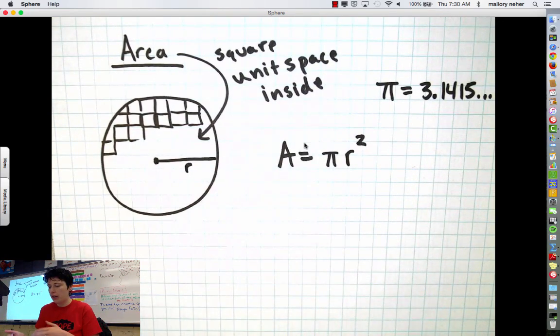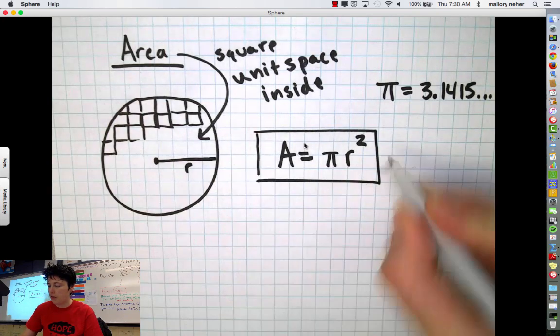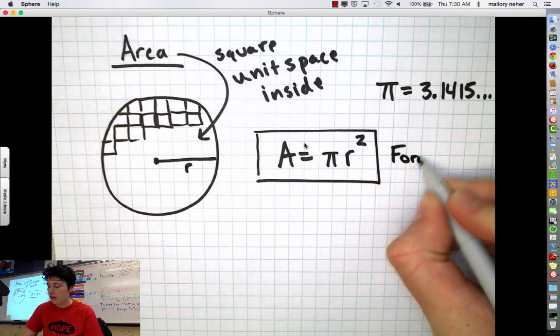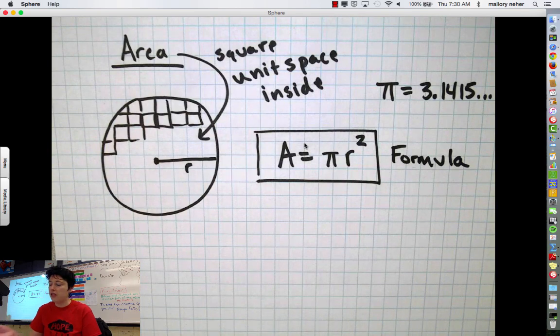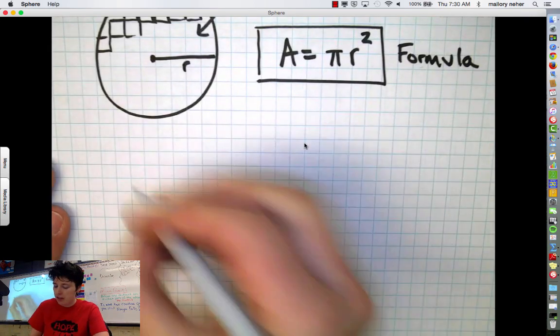So let's try using the formula and I guess the big thing is you might put a box around this in your notes. If you memorize this formula you'll really be able to calculate the area of any circle. So it's a very helpful formula. So we're going to try using it. We're going to do an example here.